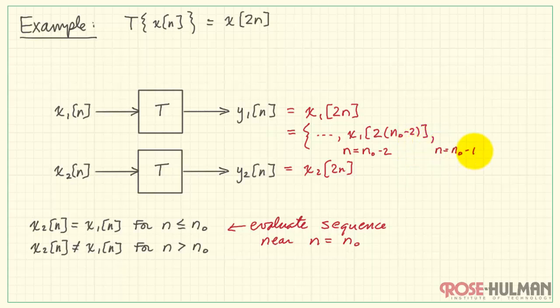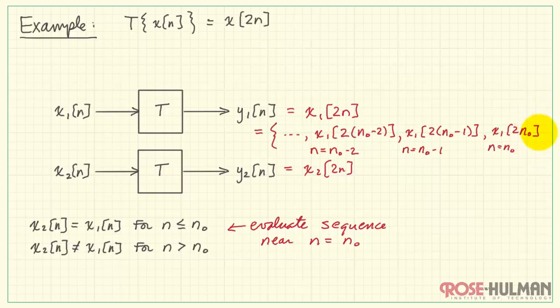Now at the next time step n equals n naught minus 1, we have this result. And then finally, where we are trying to end up, at n equals n naught, we would have X1 of 2n naught. And the sequence certainly can continue beyond that point. We're just mainly interested in this area right around n naught.